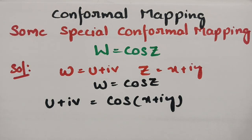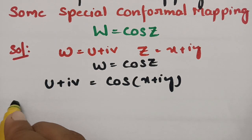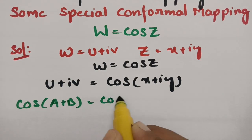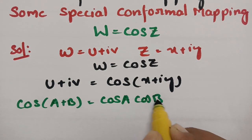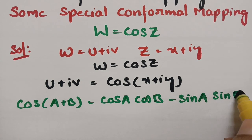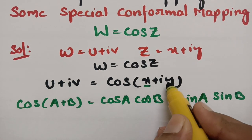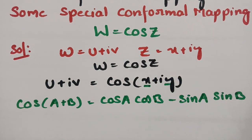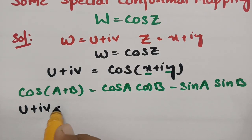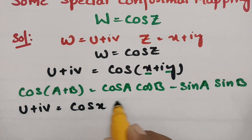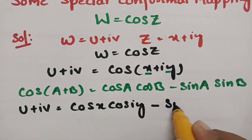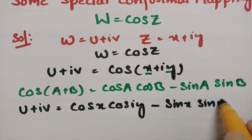Here is the formula: cos(A+B) equals cos A cos B minus sin A sin B. Now if I consider X as A and iY as B, this gives us U plus iV equals cos X cos(iY) minus sin X sin(iY).